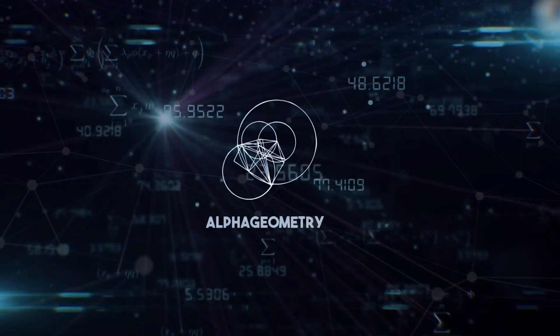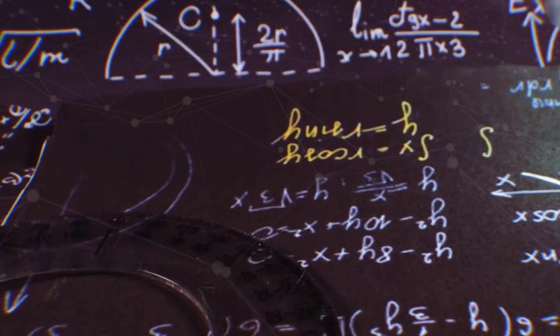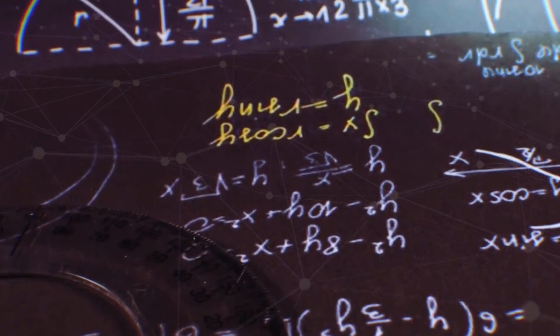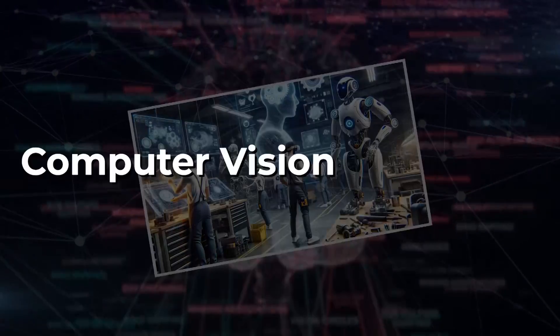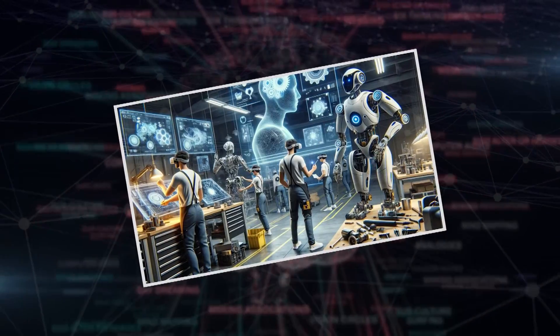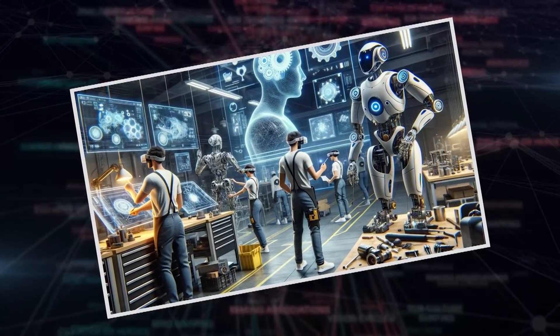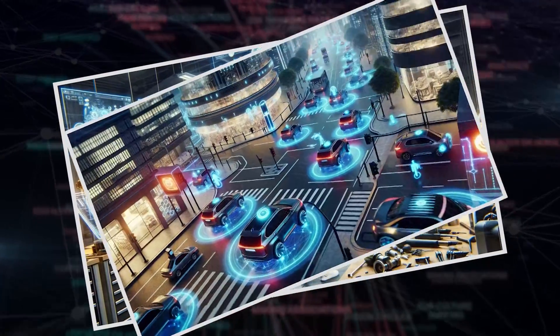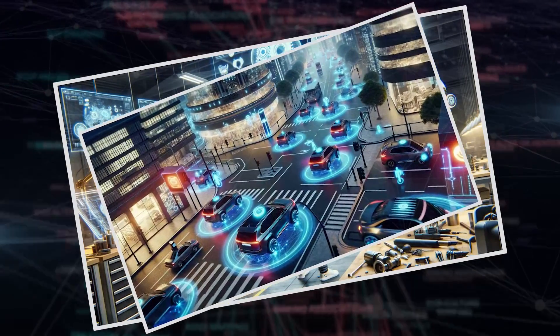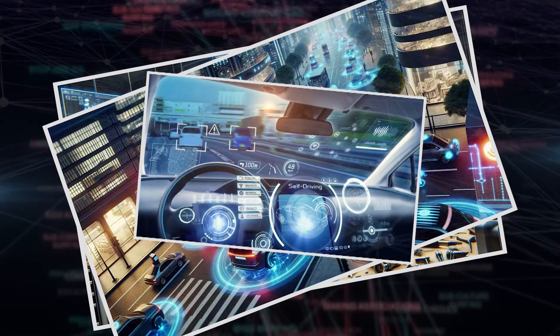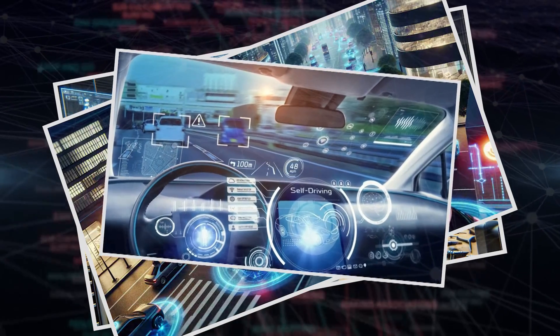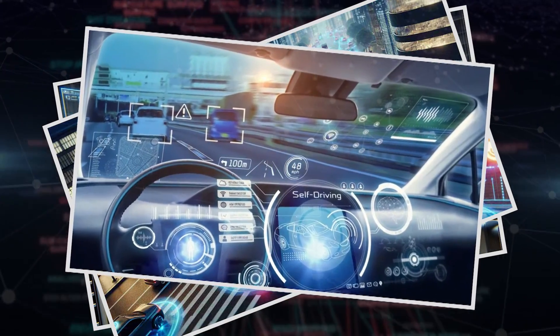Alpha Geometry's potential stretches far into domains where geometry is not just a subject, but the backbone of innovation and discovery. For example, in the world of computer vision, Alpha Geometry could revolutionize how machines interpret the world around us. Consider autonomous vehicles navigating bustling city streets. Alpha Geometry could enhance their ability to understand spatial relationships, making split-second decisions about the environment more accurate and safe.